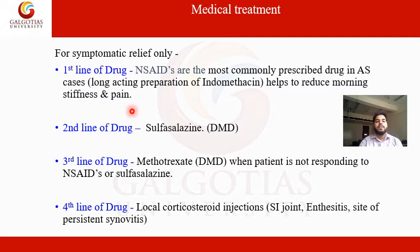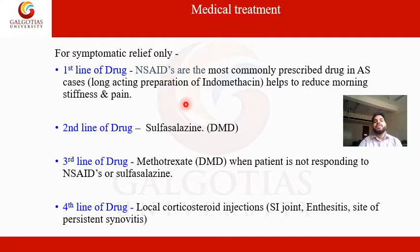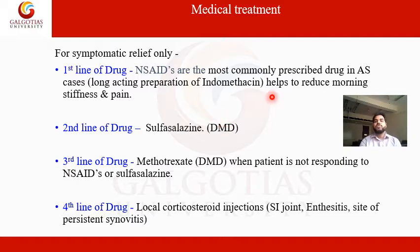Medical management includes drugs. The first line of drug is NSAIDs — non-steroidal anti-inflammatory drugs. Since ankylosing spondylitis is an inflammatory condition, we first stop the inflammation. The most commonly prescribed drug is indomethacin (a long-acting preparation), which helps reduce morning stiffness and pain.